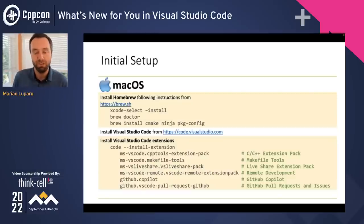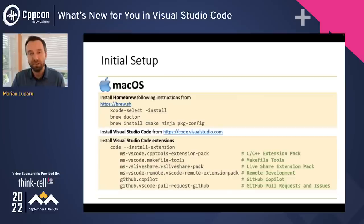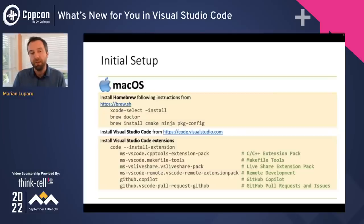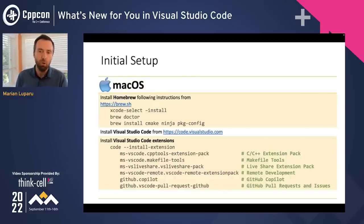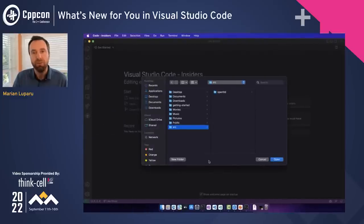Other than that, all I did is install Visual Studio Code and a set of extensions important for C++ development. The command line shown here to install VS Code extensions is a recent feature that makes it super easy to install all extensions at once — a good alternative to the extensions pane if you know what you're looking for. Let's switch back to VS Code and open the codebase.